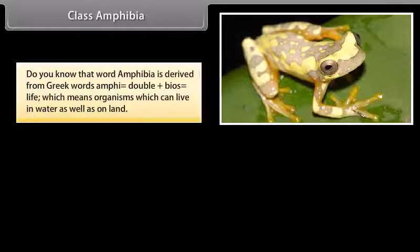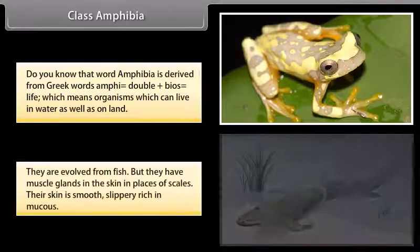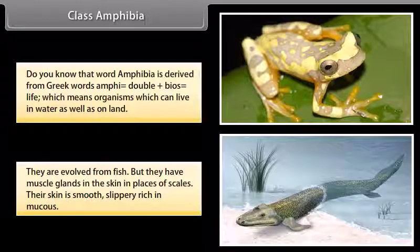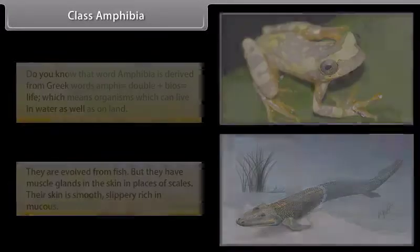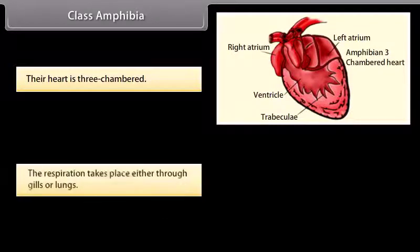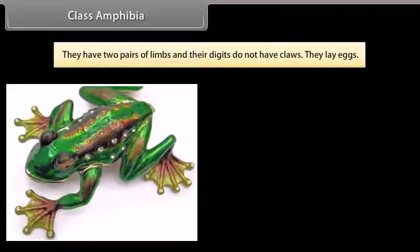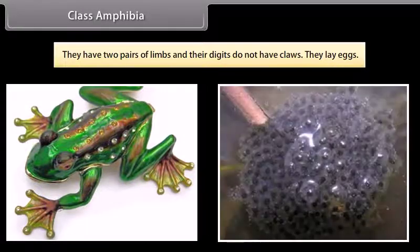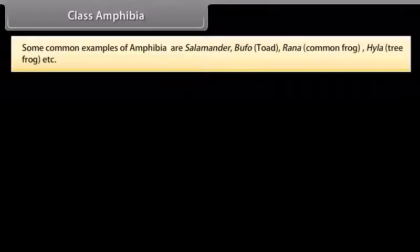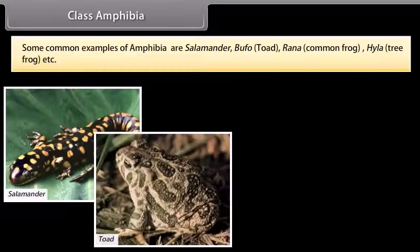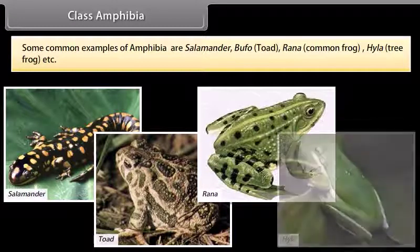Class Amphibia. The word amphibia is derived from Greek words: amphi, double, plus bios, life, meaning organisms which can live in water as well as on land. They are evolved from fish but have mucous glands in the skin instead of scales. Their skin is smooth, slippery, and rich in mucus. Their heart is three-chambered. Respiration takes place either through gills or lungs. They have two pairs of limbs and their digits do not have claws. They lay eggs. Some common examples are Salamander, Bufo (toad), Rana (common frog), and Hyla (tree frog).